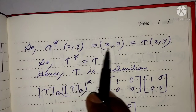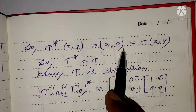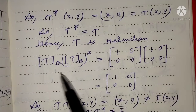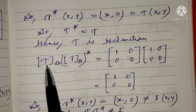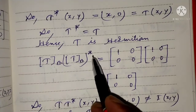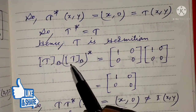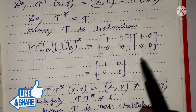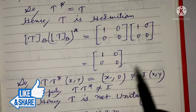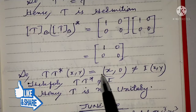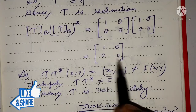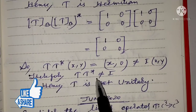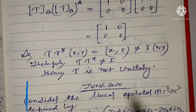t* of (x, y) equals (x, 0). T of (x, y) equals T of (x, y), so t* equals T. Hence T is Hermitian. But T·t* of (x, y) equals (x, 0), which is not equal to I of (x, y) equals (x, y). Therefore T·t* is not equal to I, hence T is not unitary.